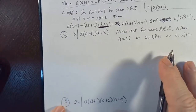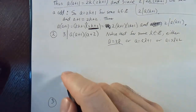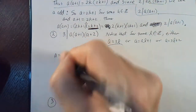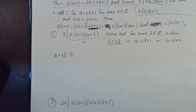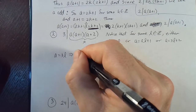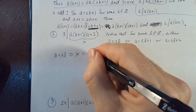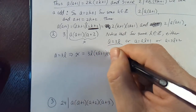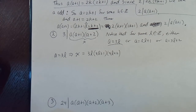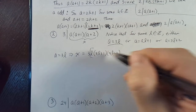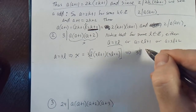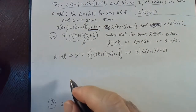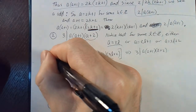Let's suppose case one: a equals 3l. Let x equal a times a plus one times a plus two. All I need to show is that x can be written as three times some integer. If a is 3l, then x equals 3l times 3l plus one times 3l plus two. We're already done — x is three times that number, so three divides a times a plus one times a plus two.